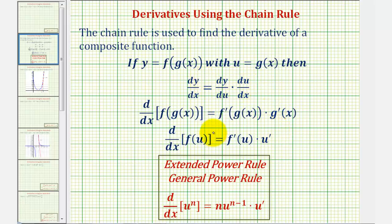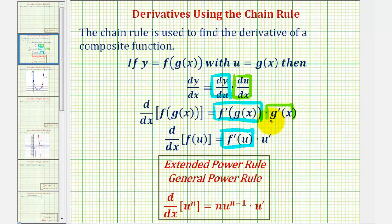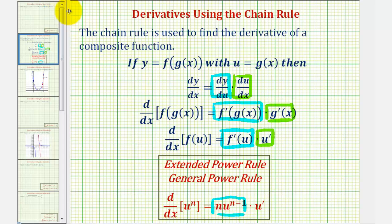Looking at these notations, dy/du, f prime of g of x, and f prime of u represent the derivative of the outer function, and du/dx, g prime of x, and u prime all represent the derivative of the inner function. If we apply the chain rule to the basic power rule, we get what's often called the extended power rule, or general power rule. If we want to find the derivative of u to the n with respect to x, where u is the inner function, it's equal to n times u to the power of n minus one times u prime — this being the derivative of the outer function, and u prime the derivative of the inner function.